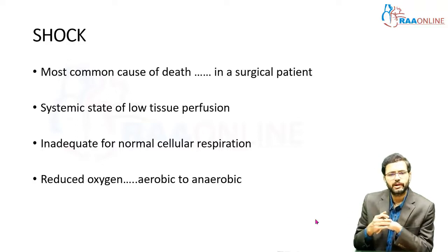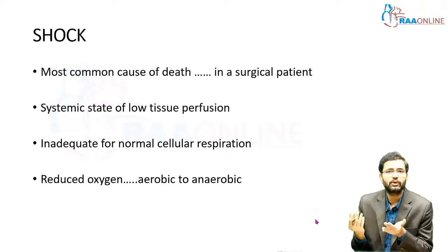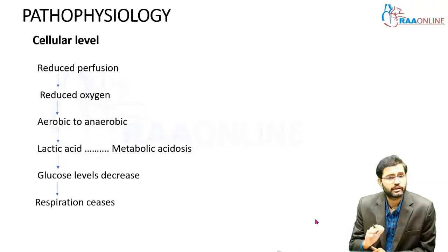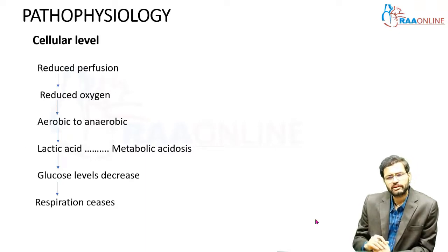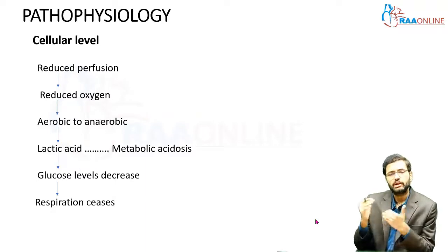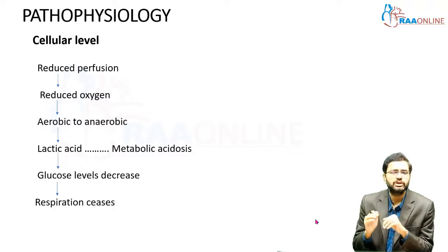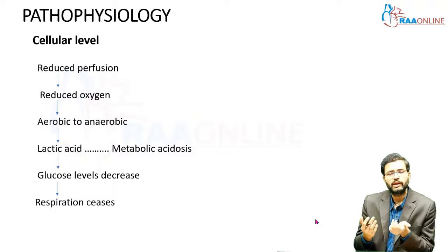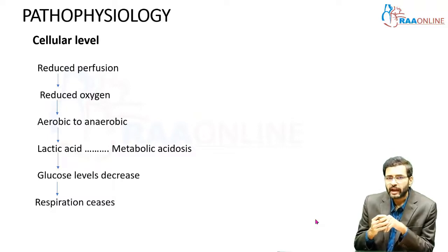Once there is reduced blood supply, there is reduced oxygen, and because of that, what is usually aerobic respiration becomes anaerobic at the cellular level. It is very important to identify the changes that occur as a result of shock. We can divide these changes into two levels: the cellular level and the microvascular level. At the cellular level, when you have reduced perfusion, there is reduced oxygen delivered to the cells, and aerobic respiration becomes anaerobic. The end product of anaerobic glycolysis is always lactic acid.